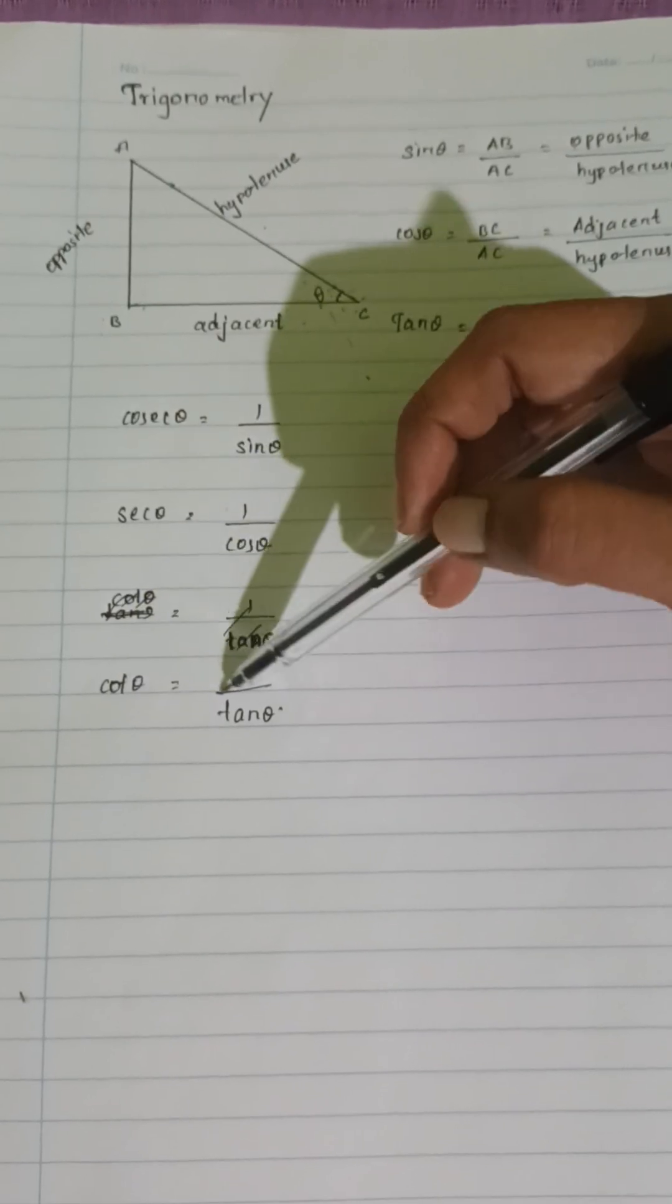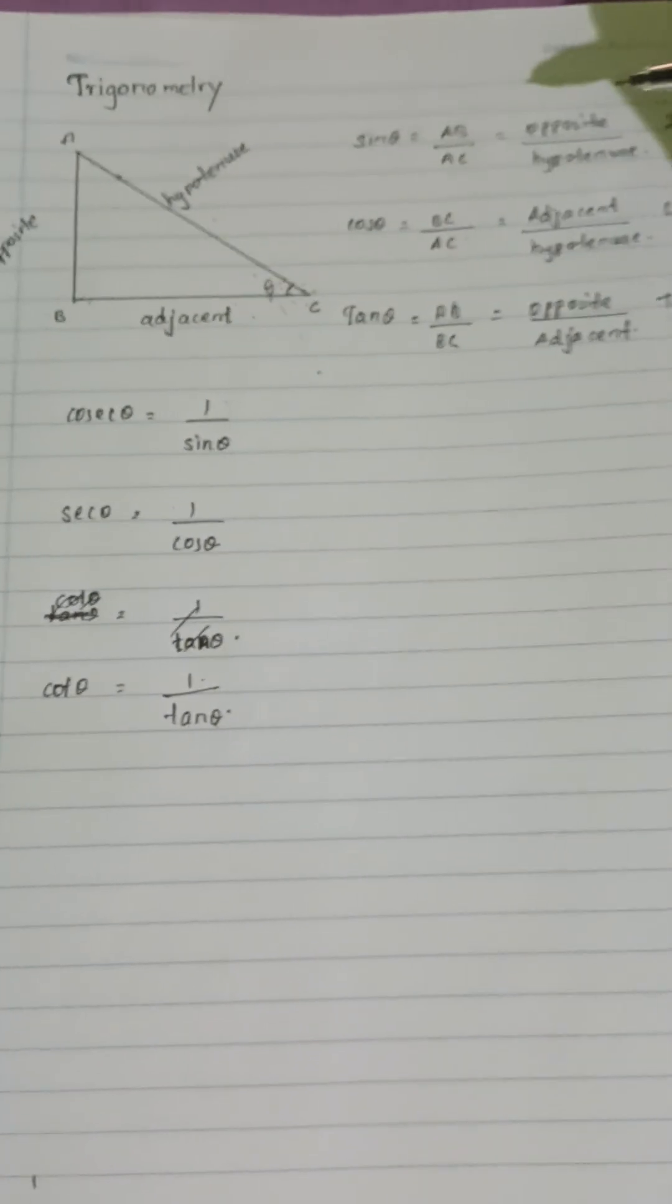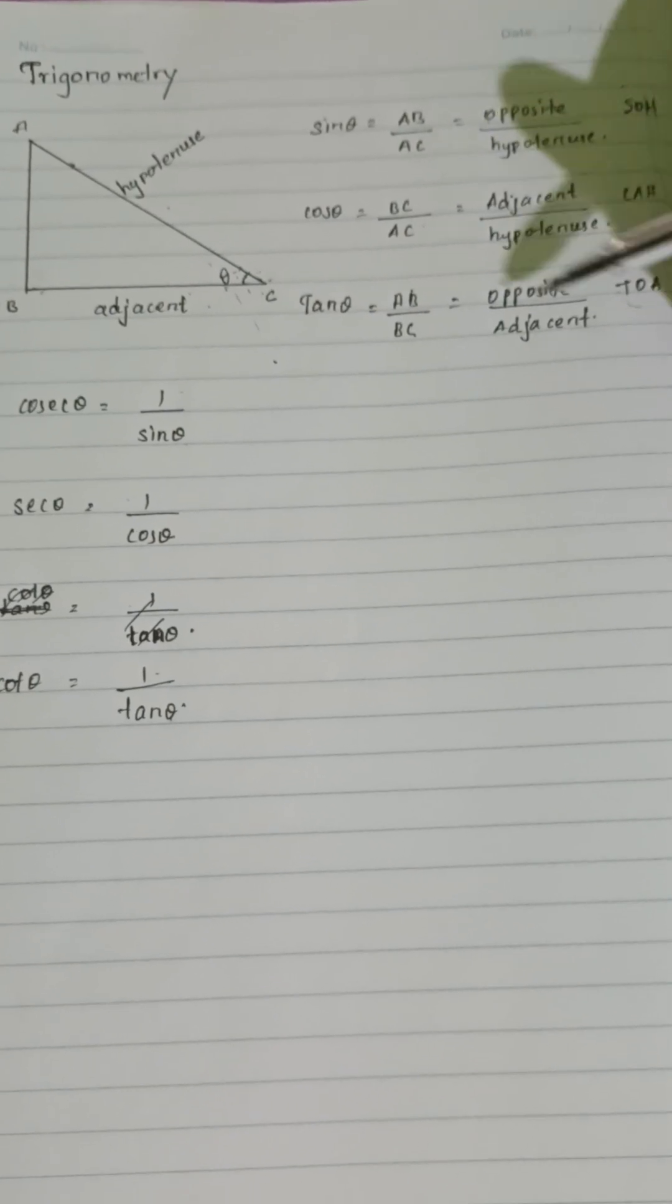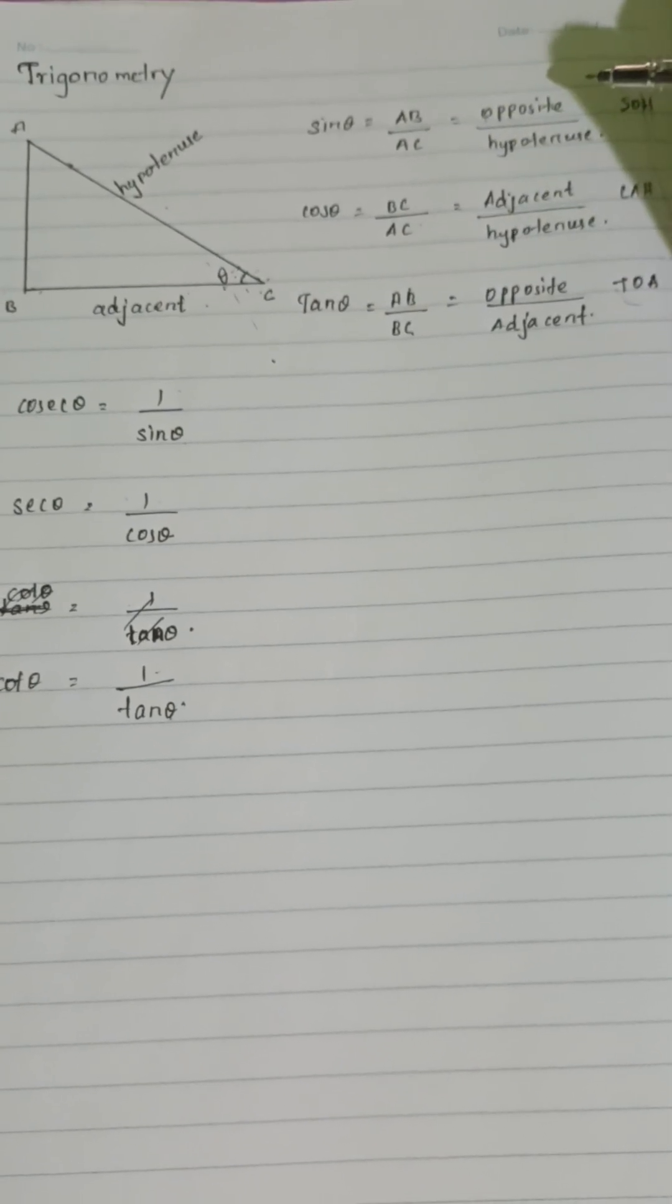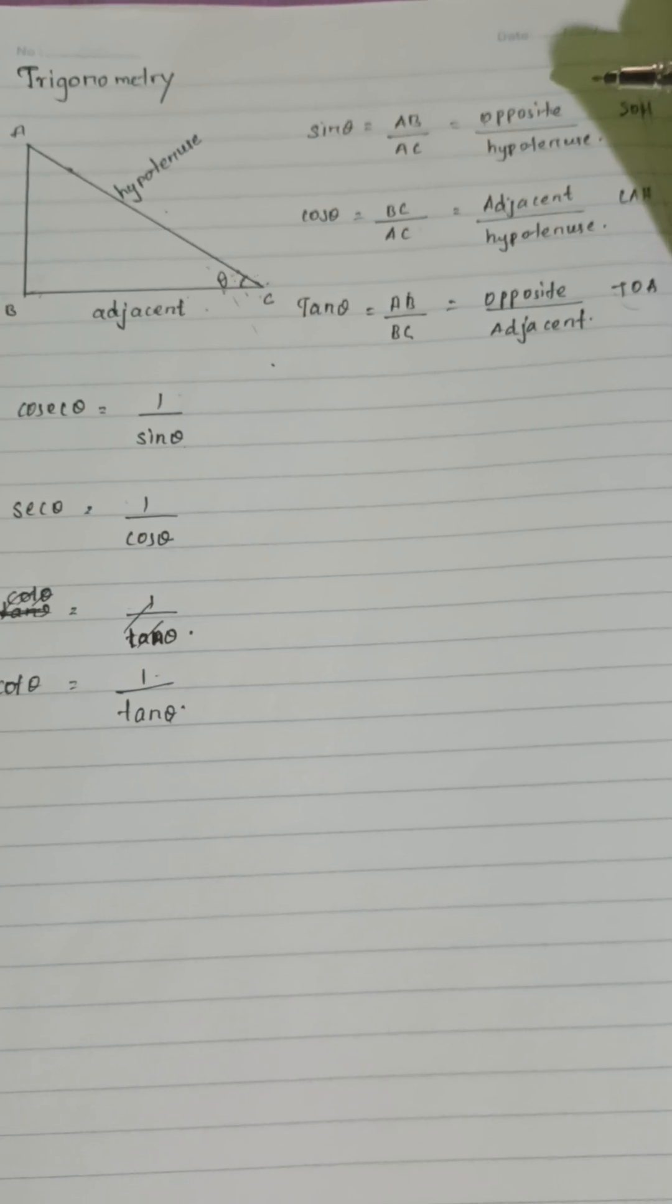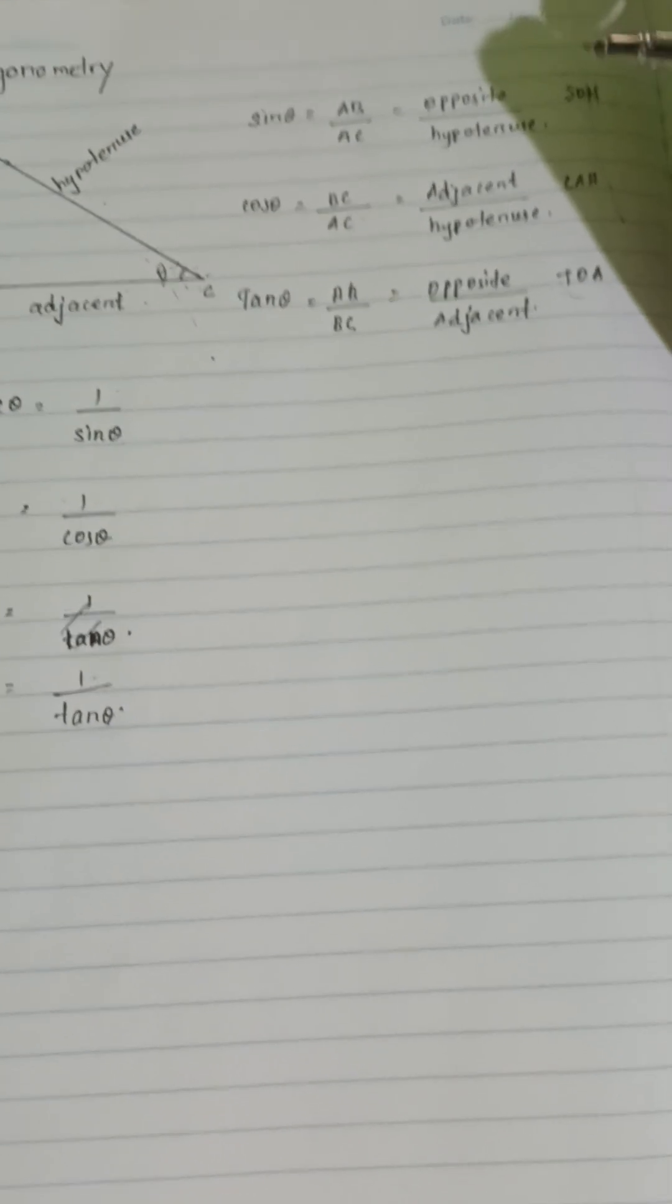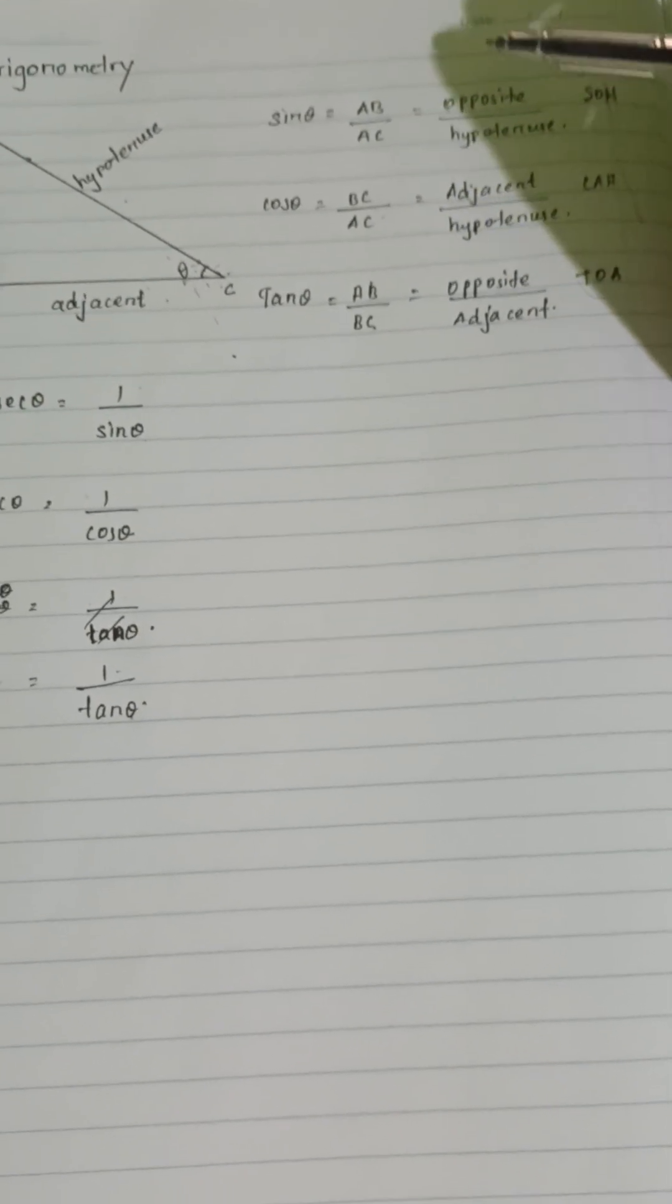Cosec theta equals 1 over sin theta, sec theta equals 1 over cos theta, and cot theta equals 1 over tan theta. If you forget these formulas, we need to know the correct form, otherwise the calculation will be wrong. That's why I have some easy tips to remember.